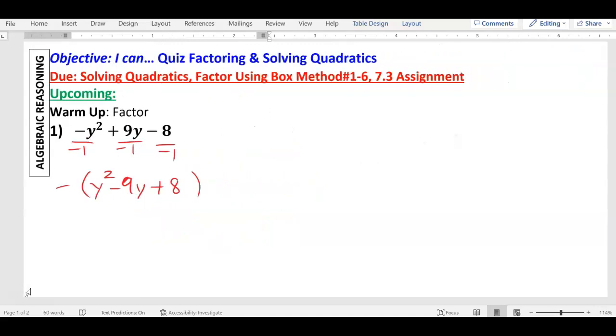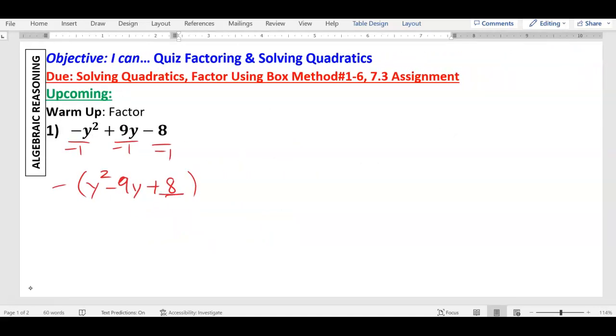Let's find all the factors of 8. What are the factors of 8? 1 times 8, and negative 1, negative 8. What about 2? 2 times 4, and then negative 2 times negative 4. That's it.